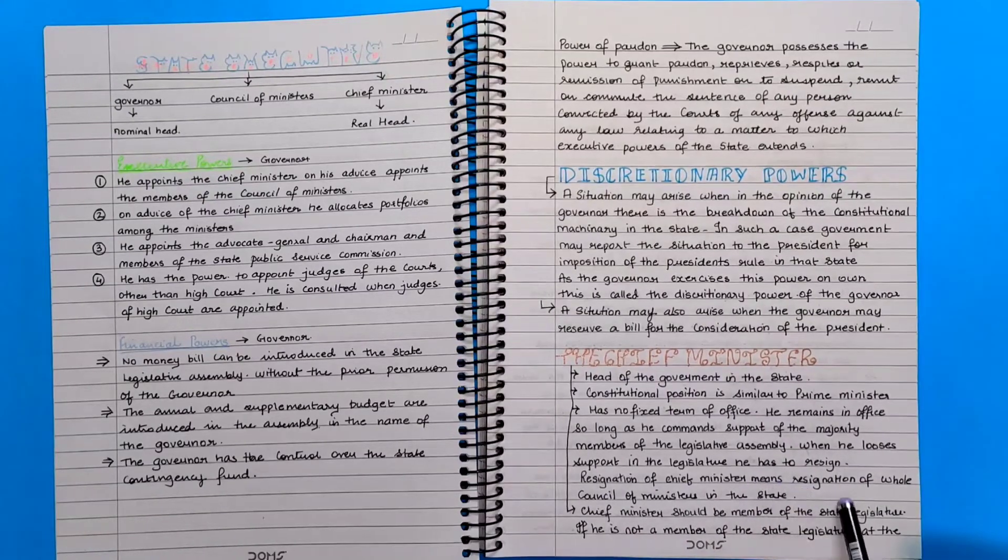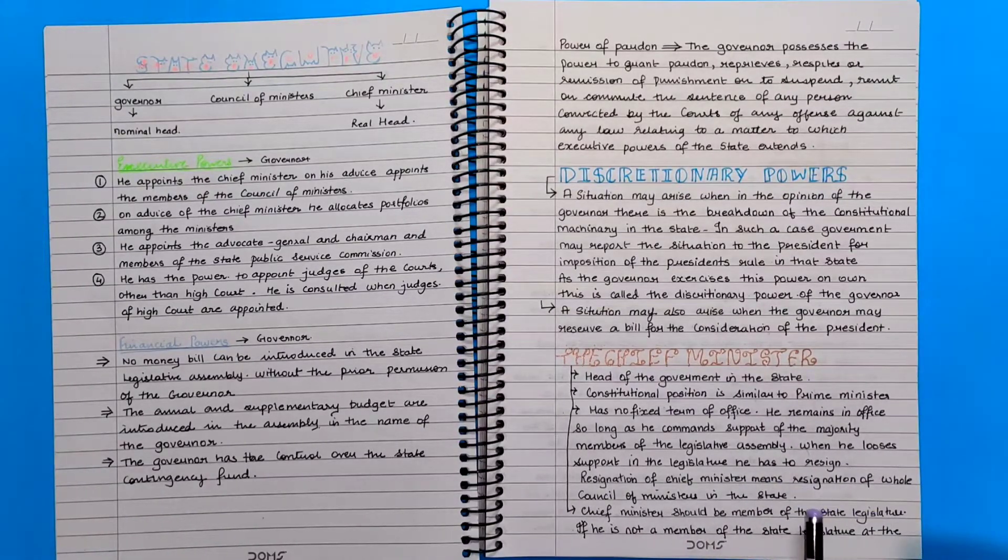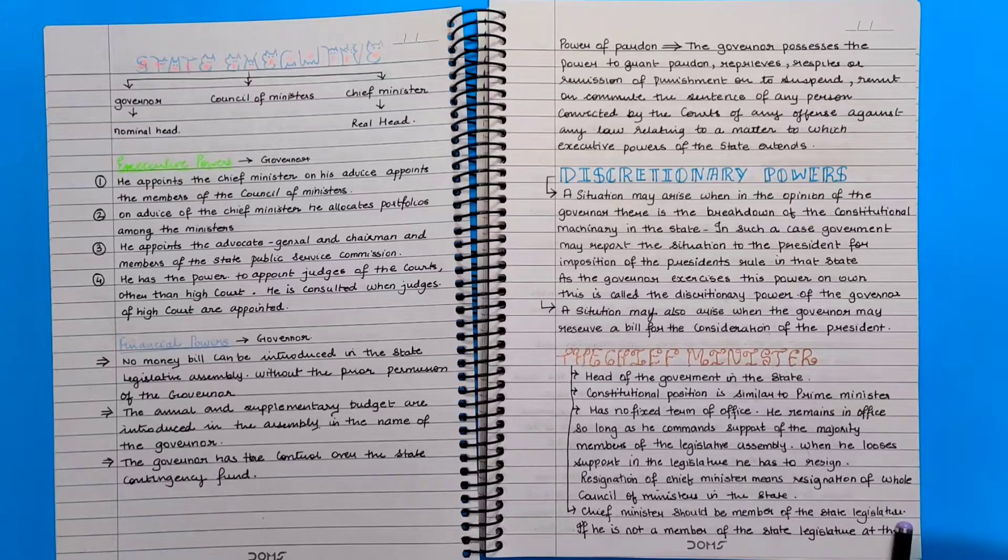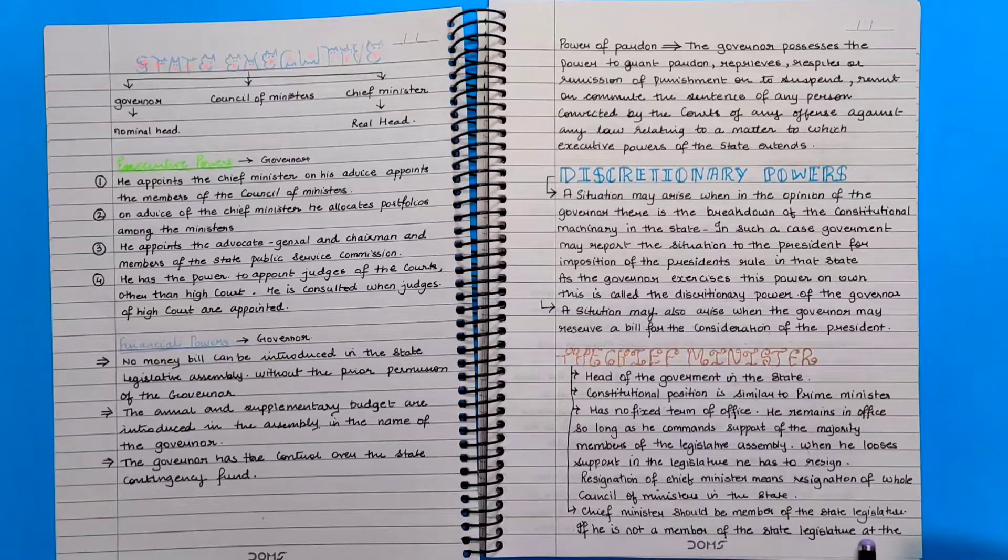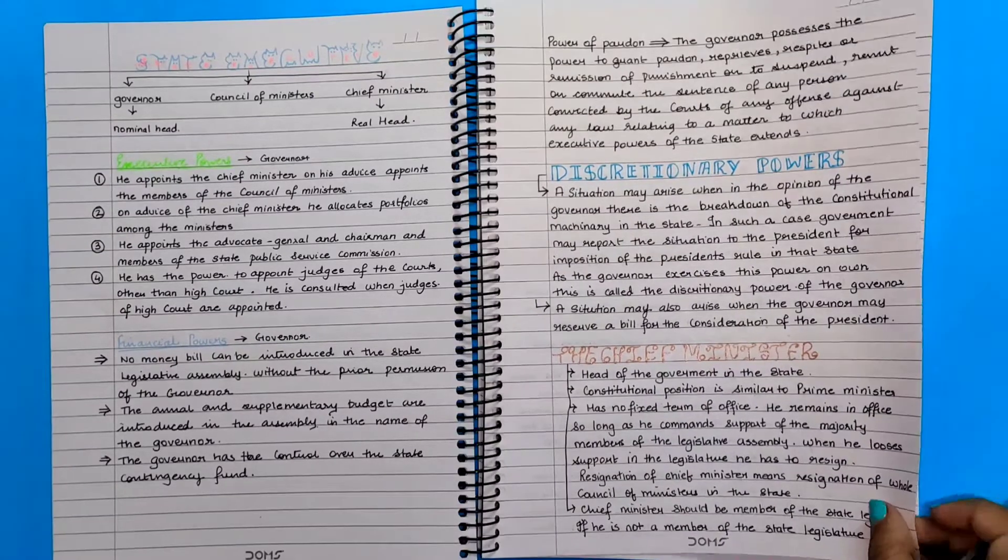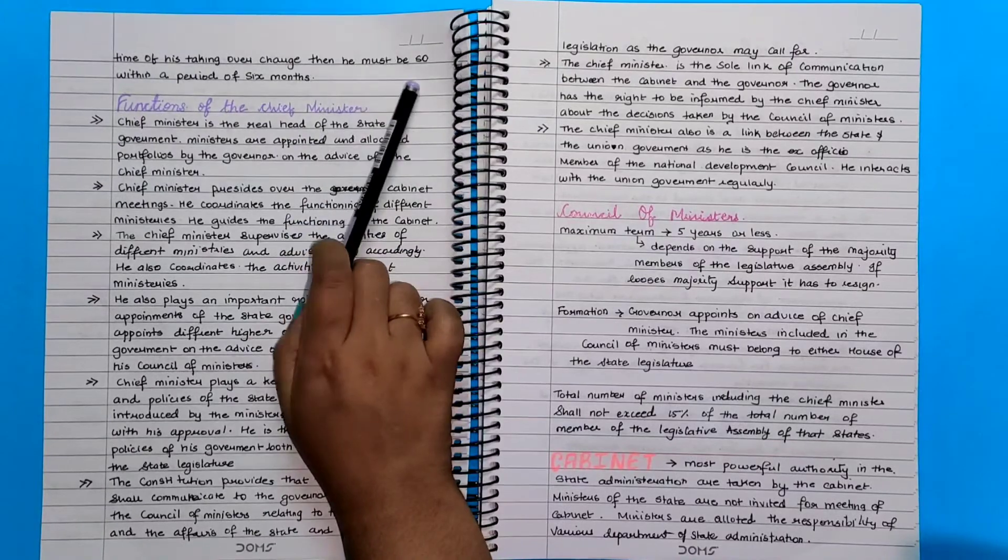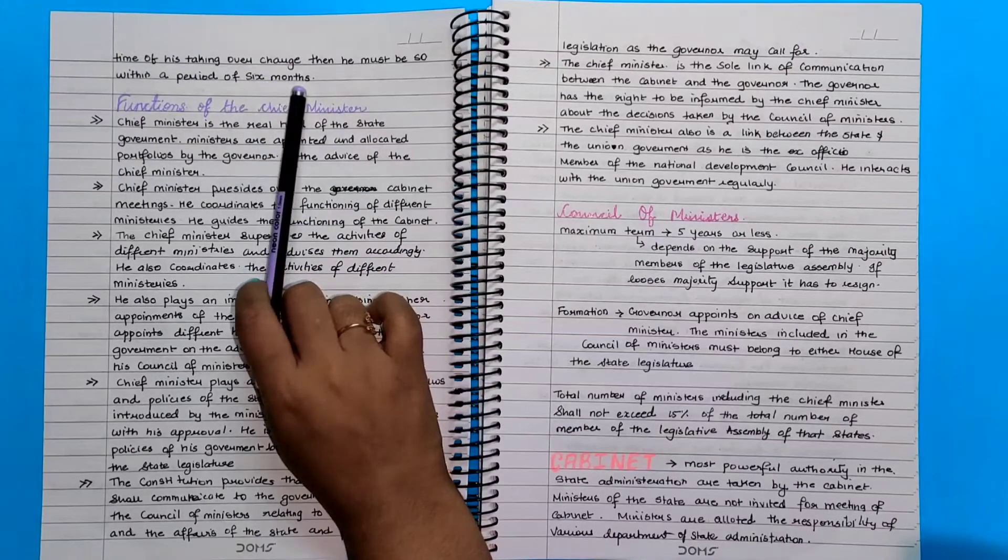Resignation of the chief minister means resignation of the whole council of ministers in the state. The chief minister should be a member of the state legislature. If he is not a member of the state legislature at the time of his taking over the charge, then he must be so within a period of six months.